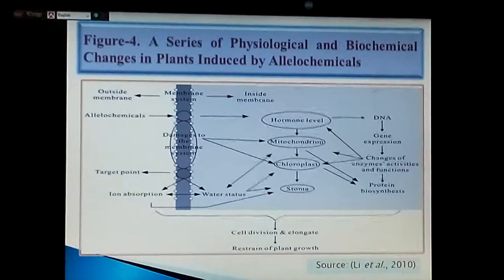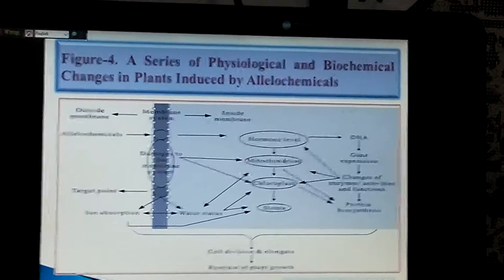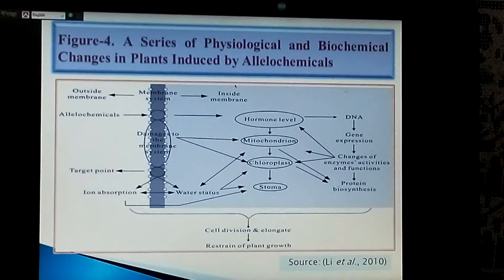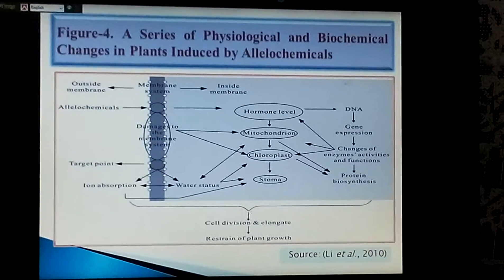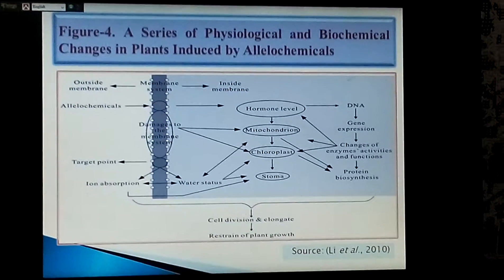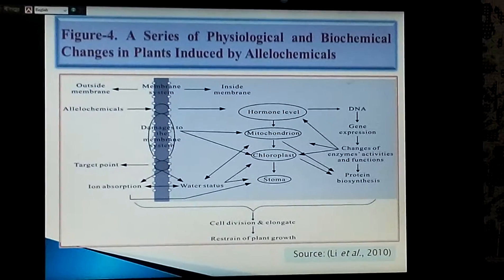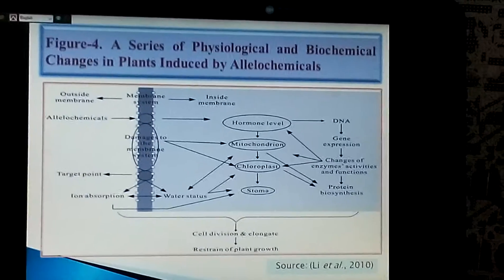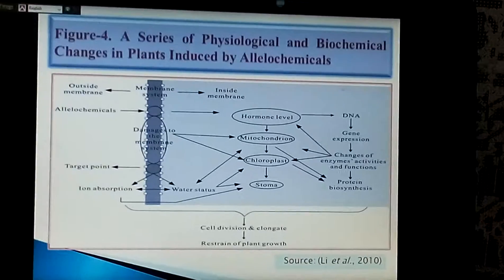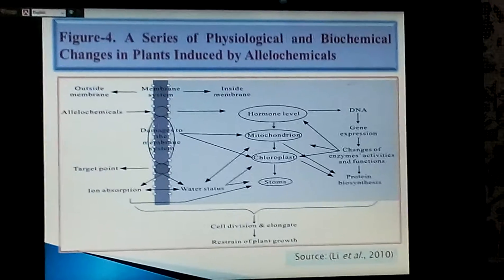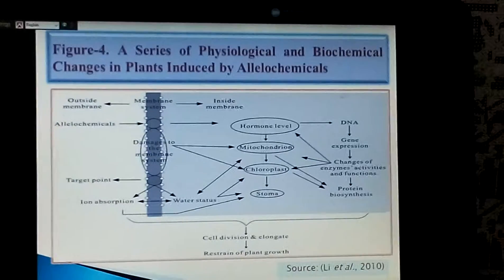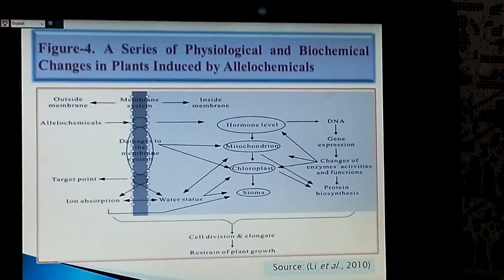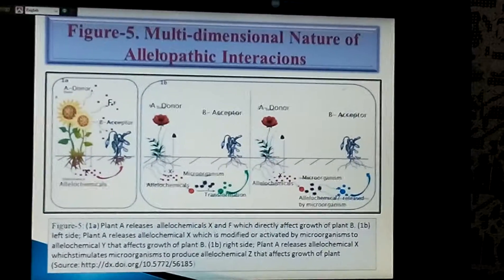Figure 4 is the most important part of the presentation. It shows the mode of action of bio-allelopathic chemicals. The plant membrane is divided into two parts: inner membrane and outer membrane. Allelochemicals enter into the inner membrane through the target point. From the target point, they damage the membrane system and reach the hormonal level, causing hormonal imbalance. When hormonal level is disrupted, the whole physiological system of the plant is interrupted, finally affecting cell division and elongation, stopping plant growth, and sometimes causing plant death.